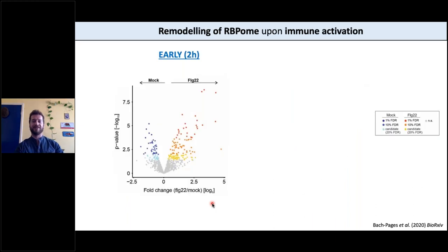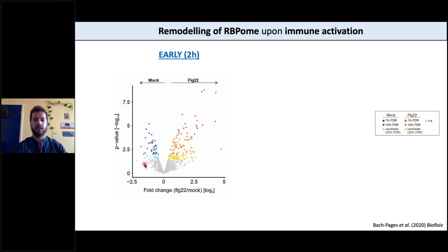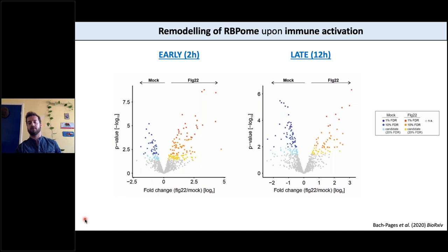We used PETRIC to pull down the active RNA binding proteins and send them for mass spec analysis. This tells us about changes in activity of RNA binding proteins upon flg22 treatment. We also sent the inputs — the total proteins — to capture changes in protein abundance. So we're getting two levels: changes in activity and changes in abundance of RNA binding proteins. On a volcano plot with flg22 versus mock fold change on the x-axis and p-value on the y-axis, anything in warm colors is up in flg22, whereas anything in cold colors is enriched in mock. We found a lot of RNA binding proteins whose activity is altered upon immune activation.